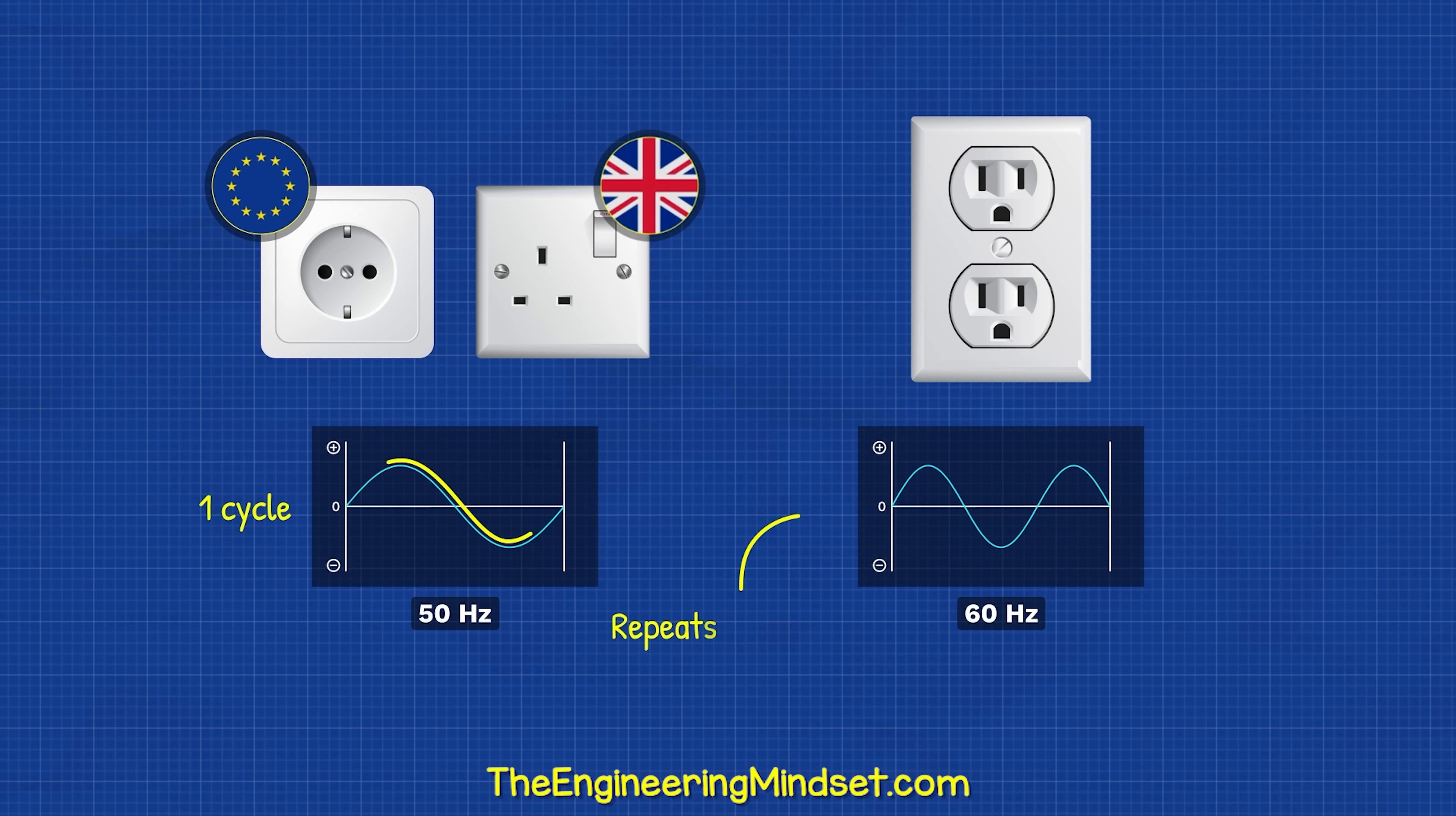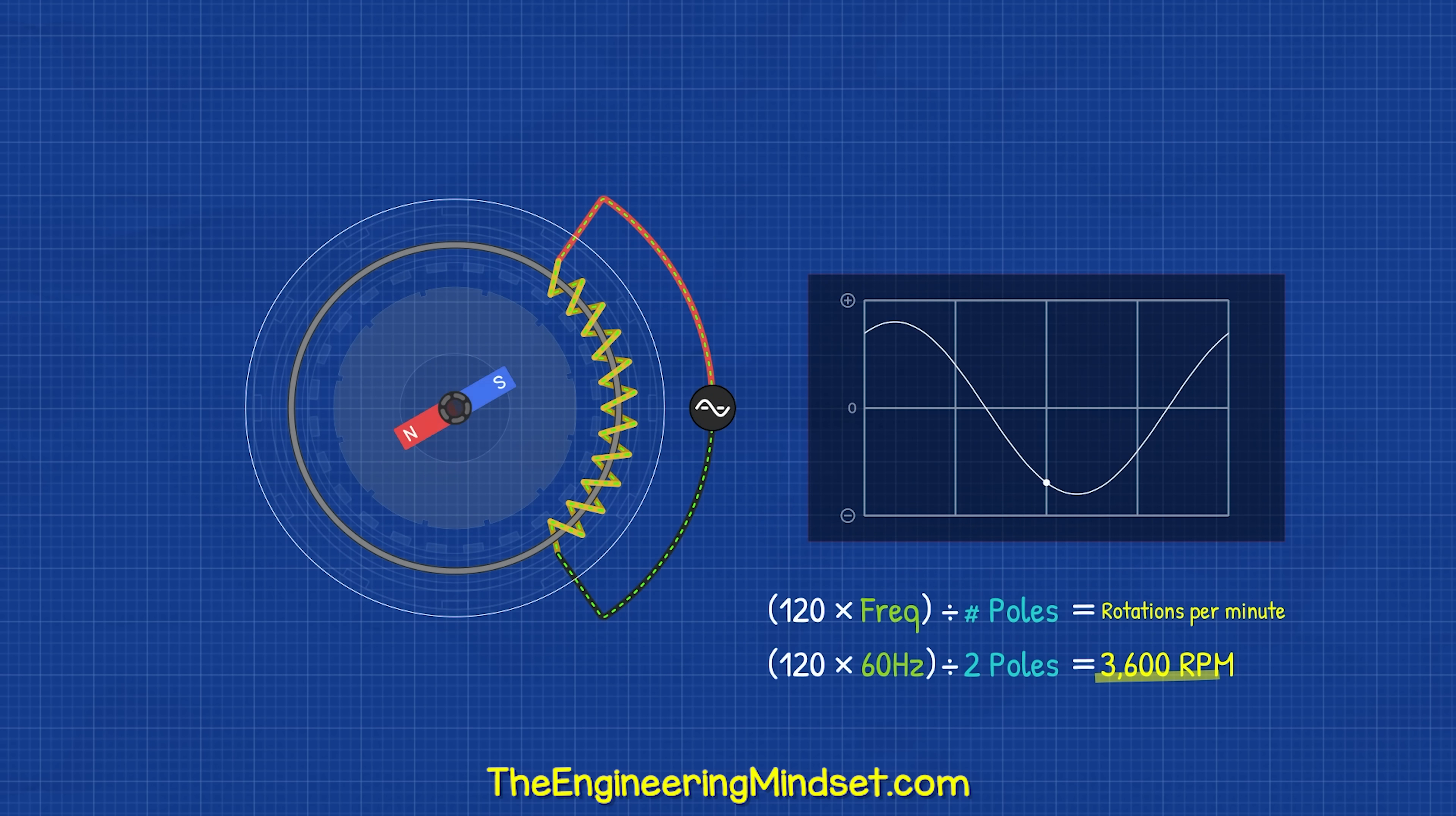The outlets in our homes provide either 50 or 60 hertz, meaning the sine wave repeats 50 or 60 times per second. To achieve that, the magnet needs to rotate thousands of times per minute.